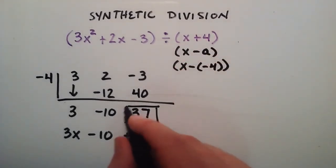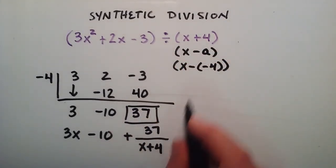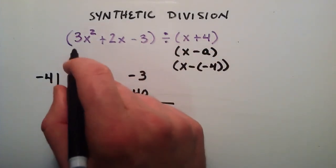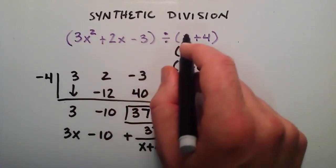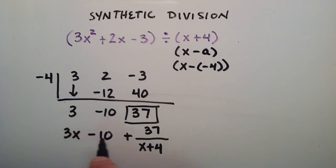So whenever we have a remainder in synthetic division, we just simply put that number over top of whatever we divided by. So the answer to this question, 3x squared plus 2x minus 3 divided by x plus 4, is equal to 3x minus 10 plus 37 over x plus 4.